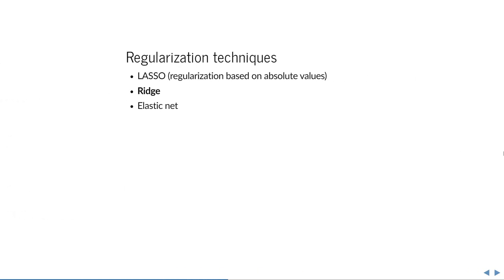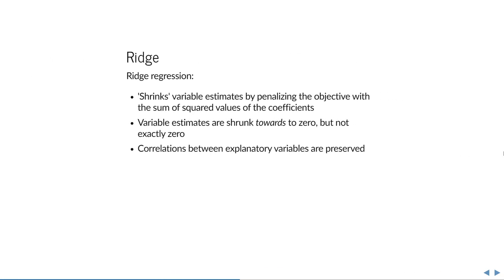That brings us to ridge regression. Just like lasso, ridge works by shrinking variable estimates with a penalty added to the usual ordinary least squares objective. When this happens, estimates are slowly shrunk towards zero as we increase regularization. But contrary to lasso, ridge never shrinks variables exactly to zero — so the obvious disadvantage is no variable selection. The advantage is that correlations between explanatory variables remain preserved, because everything is shrunk proportionally.